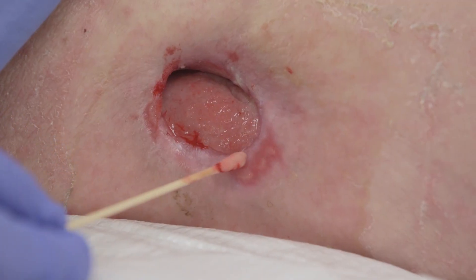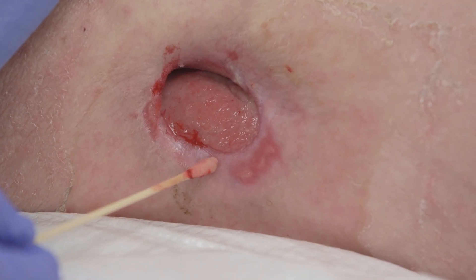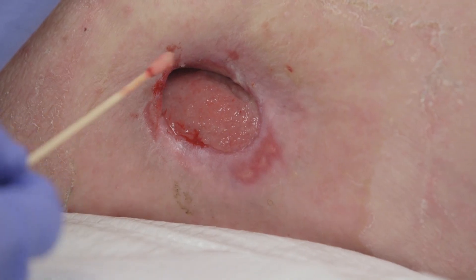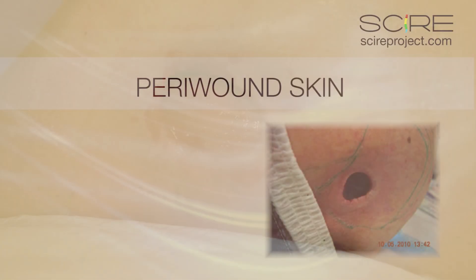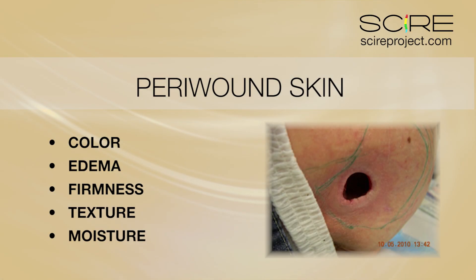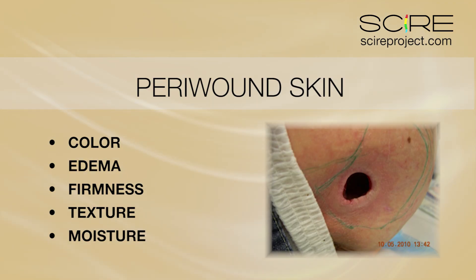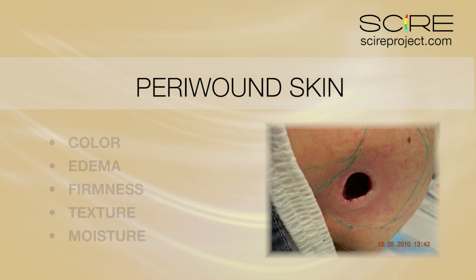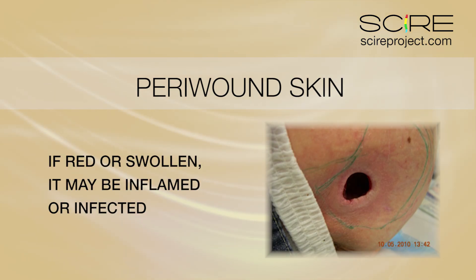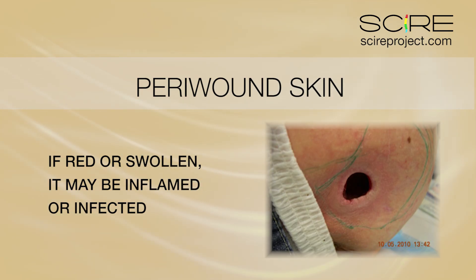Peri-wound skin is the intact skin surrounding the wound. It needs to be assessed looking for features such as color, edema, firmness, texture, and moisture. Ideally, the wound skin is intact and healthy. If it is red or swollen, it may be inflamed or infected.